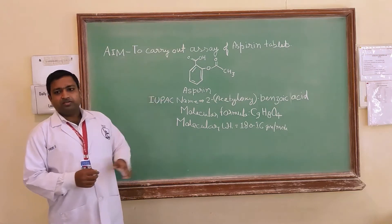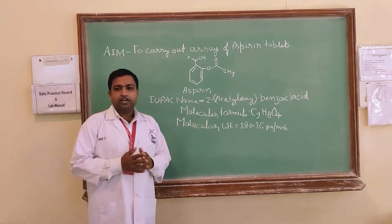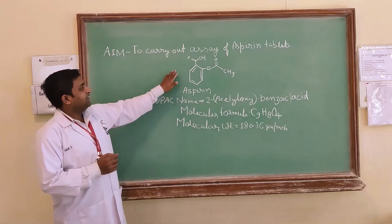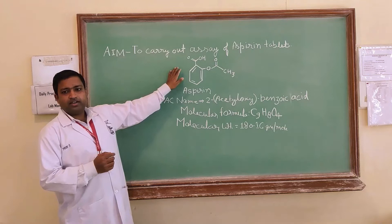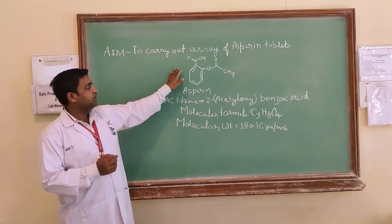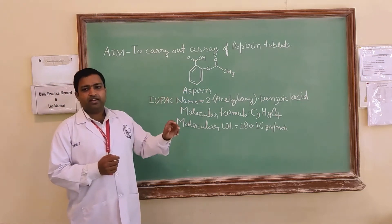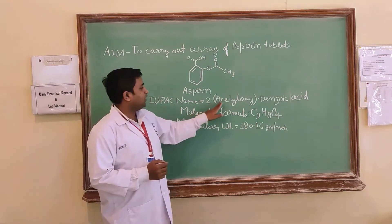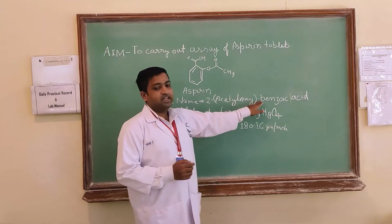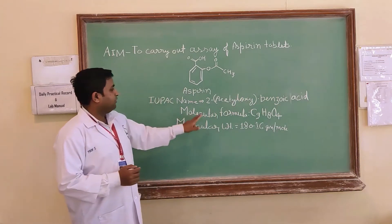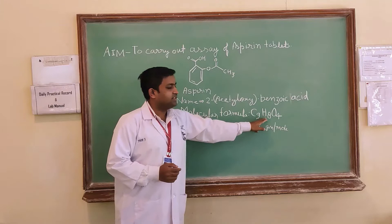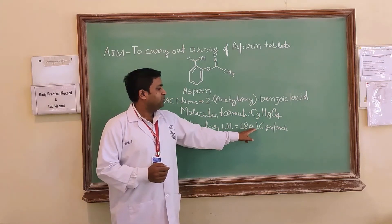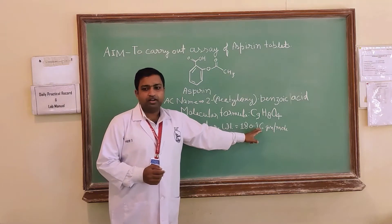Now the first question comes, what is aspirin and what is its medicinal use? Aspirin is chemically acetylsalicylic acid which is abbreviated as ASA, and its IUPAC name is 2-acetyloxybenzoic acid. Its molecular formula is C9H8O4 and molecular weight is 180.16 grams per mole.